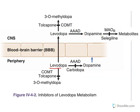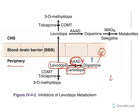Levodopa can also be converted to dopamine in peripheral tissue by amino acid decarboxylase. If this happens, dopamine cannot cross the blood-brain barrier and the drug will be useless. That is the reason why carbidopa is used. Carbidopa inhibits this peripheral decarboxylase enzyme. In fact, levodopa is used in combination with carbidopa. That is the use of carbidopa.